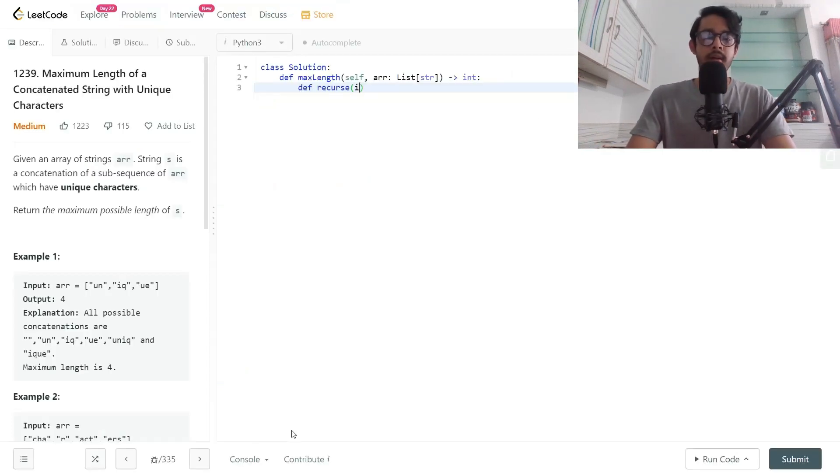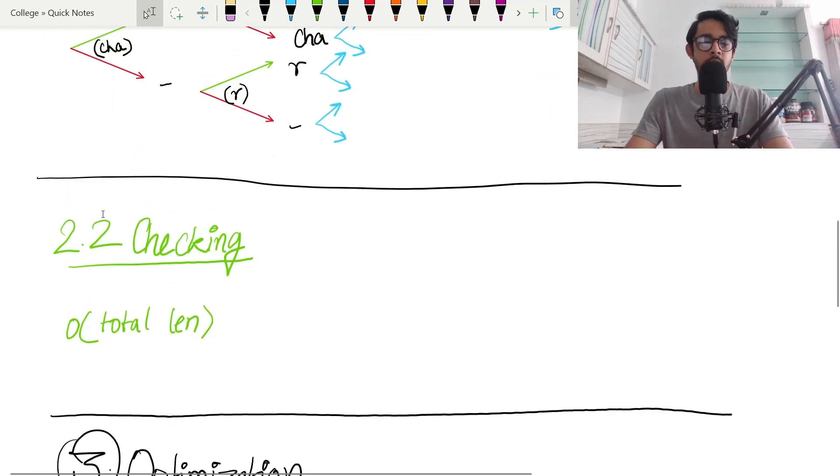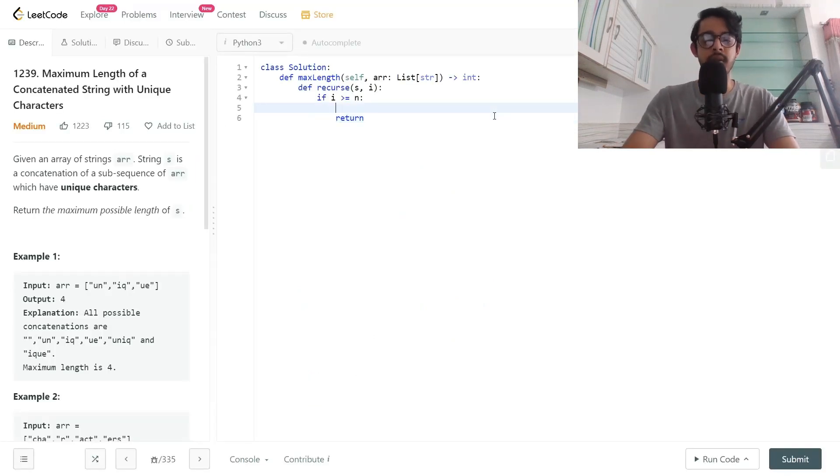The base case for recursion is if i is greater than or equals to N, then we can return. If we've exhausted every case, we can exit. Before that, we also want to check whether it's a correct unique character string. There's a neat solution in Python: check if the length of the string equals the length of the set of the string. Then the answer is the max of previous answer and current answer.